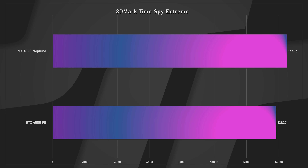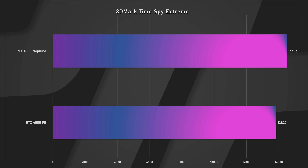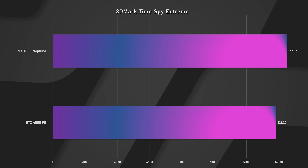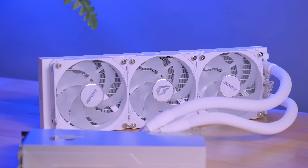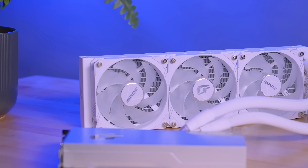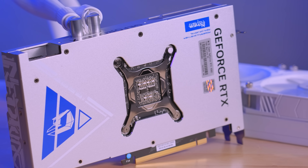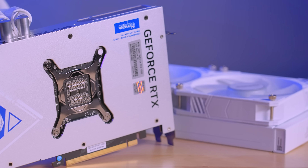The RTX 4080 FE got 13,837 versus 14,496 for the Neptune — a spread of about 660 points. 660 points in Time Spy is not easy to gain. The reason you see a higher score on the 4080 Neptune is not higher overall clocks or faster memory — it's that the water cooling is keeping the core cooler, which means it's maintaining a higher core clock for longer. The cooler you keep the card, the higher the core clock will be.